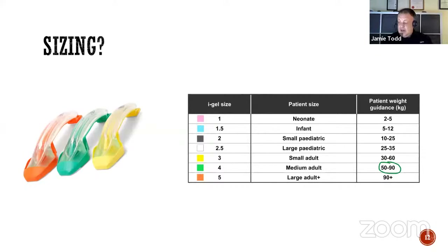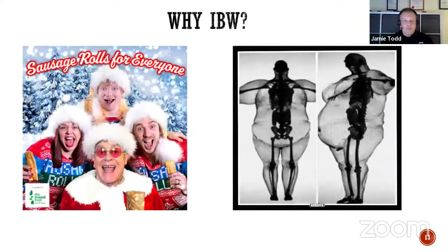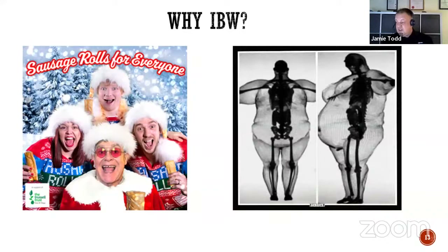The size 4 weight range is really important — the green size 4 iGel is 50 to 90 kilos, and that's something we need to remember. Why ideal body weight? This is the bit that probably 95% of paramedics who come on our airway courses don't know — they don't know that the weight range on iGels is ideal body weight, not the actual weight of the patient you're looking at. It's the weight they should be. Because of course it doesn't matter how many Christmas dinners you've been forced to eat — your airway doesn't get any bigger.